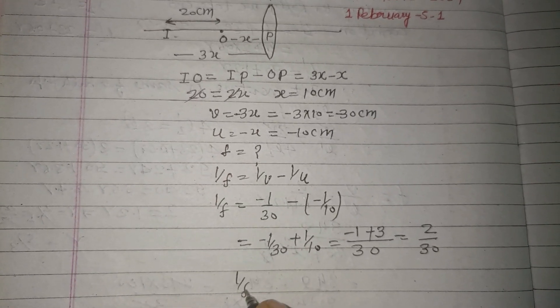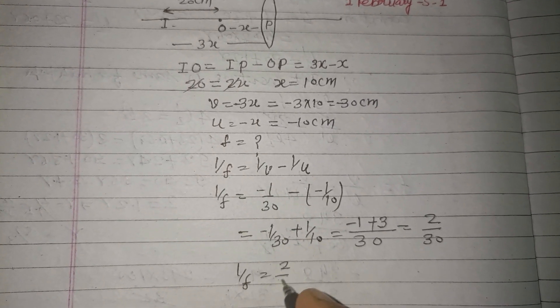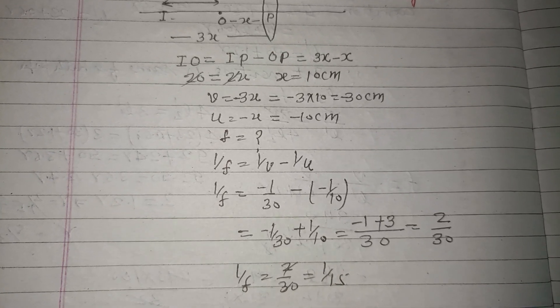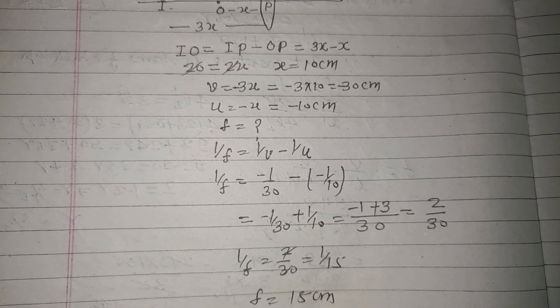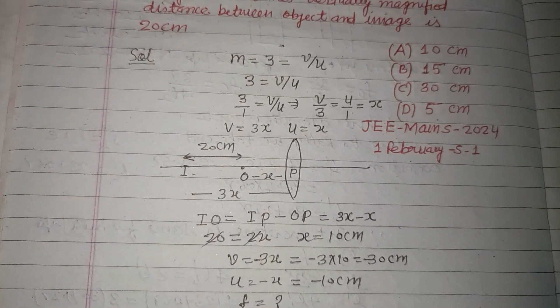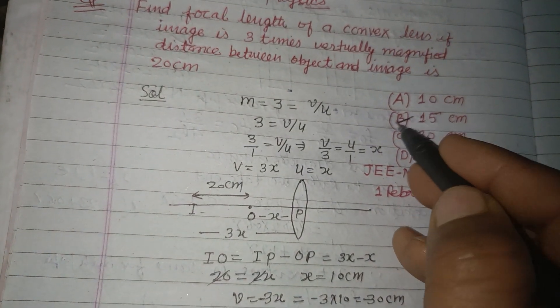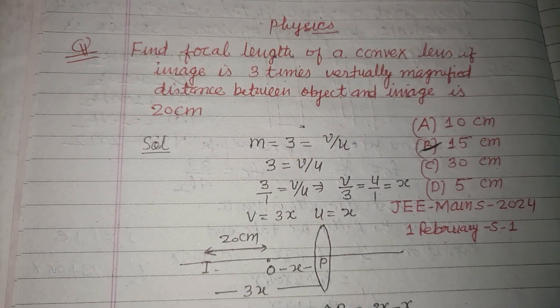So 1 upon f equals 2 upon 30, or 1 upon 15. Therefore f equals 15 centimeters. f is 15 centimeters, which is found in option B. Therefore, option B is correct. I hope you got it.